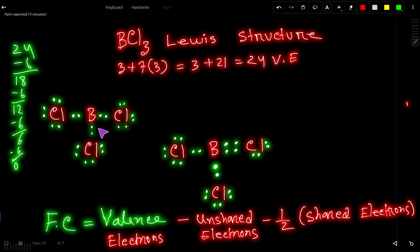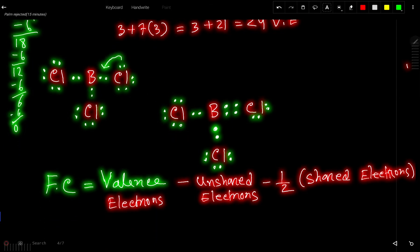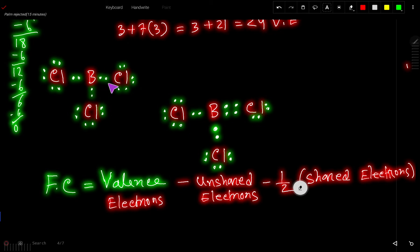In this structure, the formal charge for all the atoms is zero. We know that the best Lewis structure is the one where most atoms have zero formal charge. Boron currently has 6 electrons. If we want to satisfy the octet for boron, we can move a lone pair from chlorine to form a double bond, giving us an alternative structure. We will now determine which of these two structures is the best.